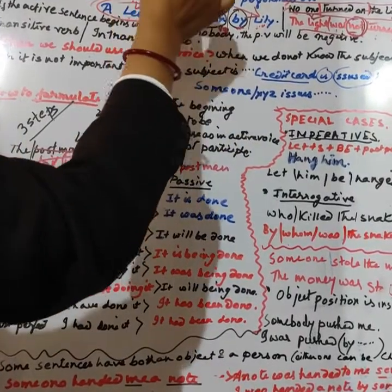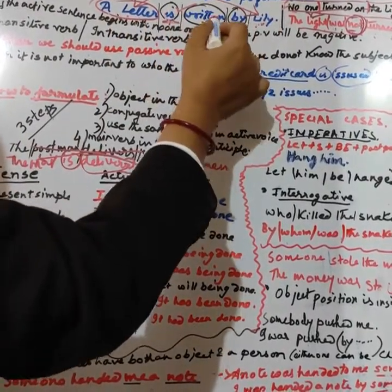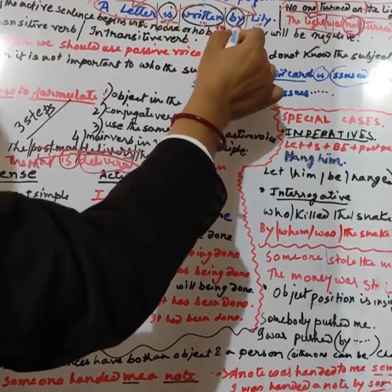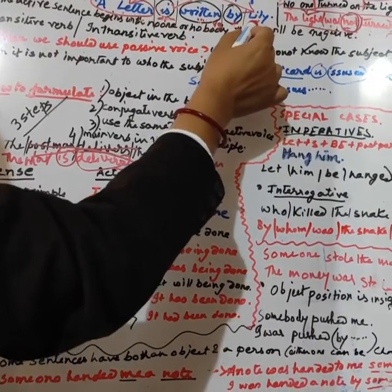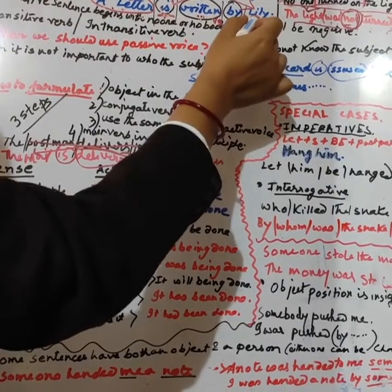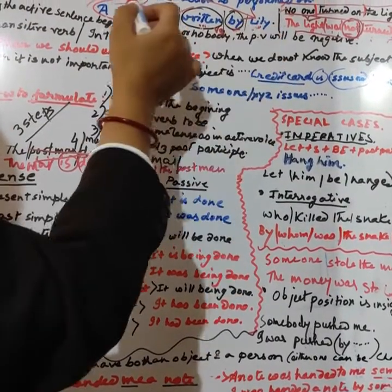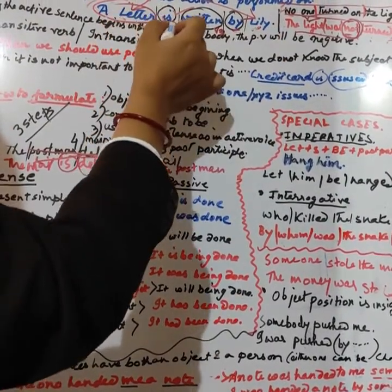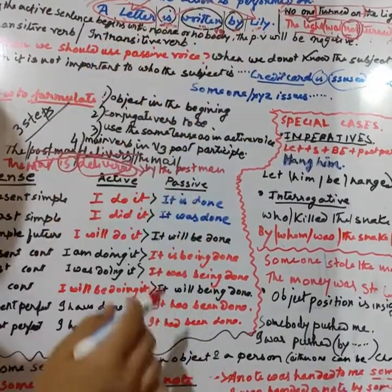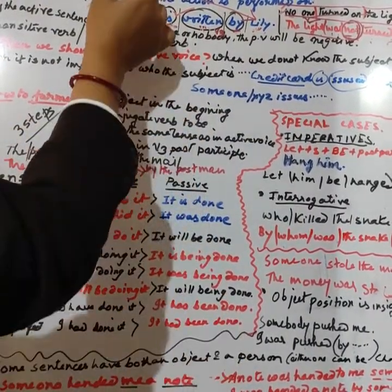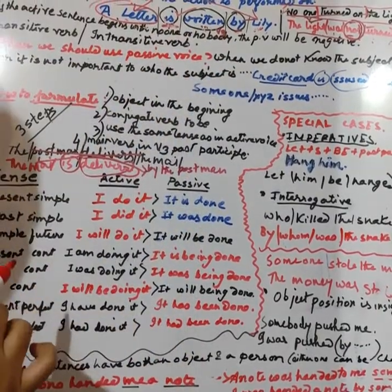Write, wrote, written. Then 'by' is introduced, and the original subject 'Lily' is placed at the end. So 'A letter is written by Lily' is the passive form of the active sentence 'Lily writes a letter.'